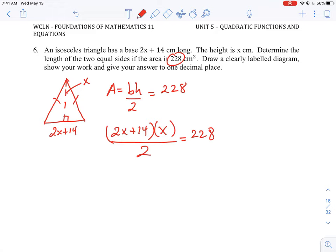So again, this will be a quadratic equation. When we pull it apart, we can bring the two over to the top here. We should get 2x squared plus 14x is equal to 2 times 228, which is 456. And then put it in standard form, we should have this quadratic equation.